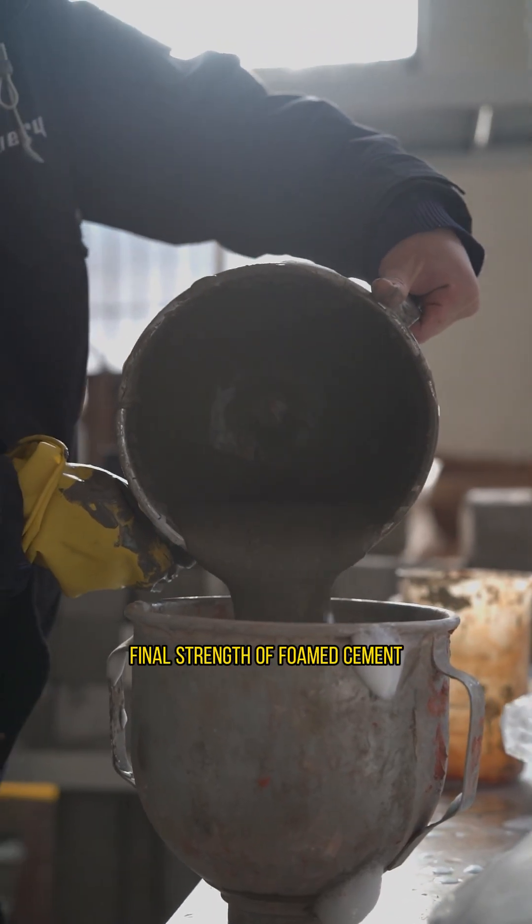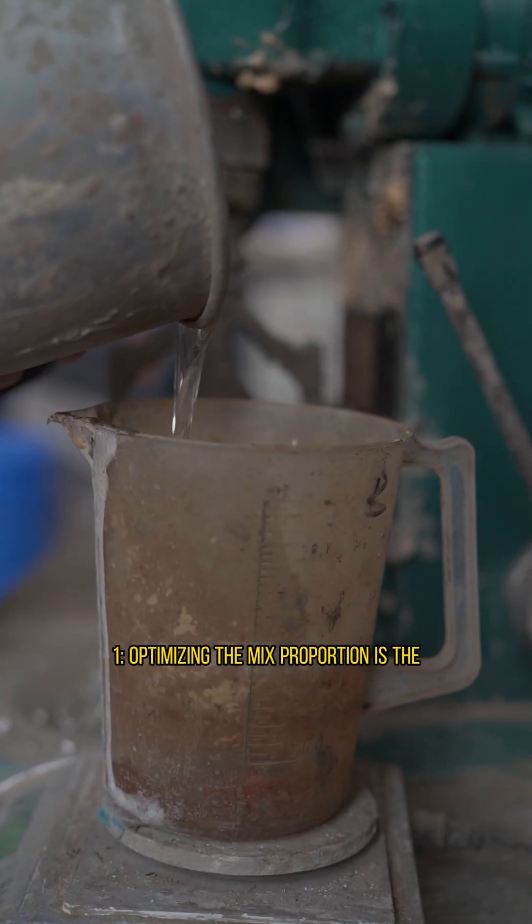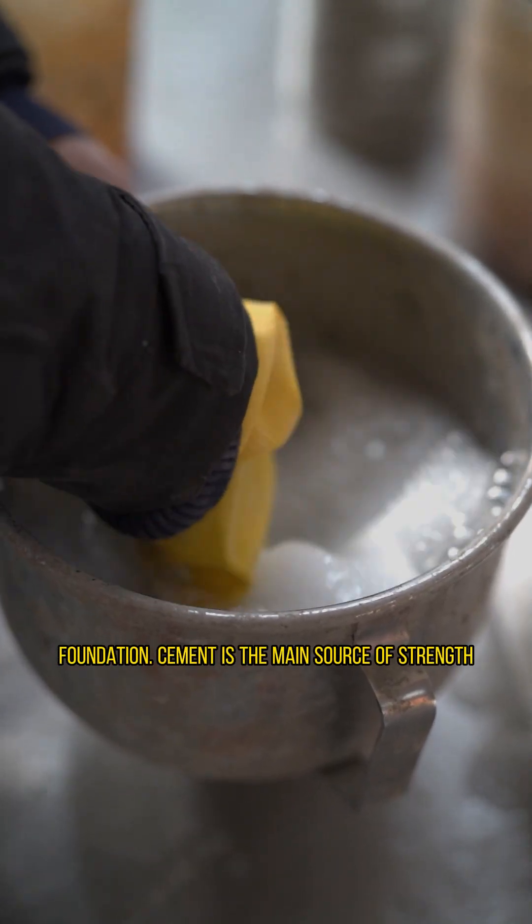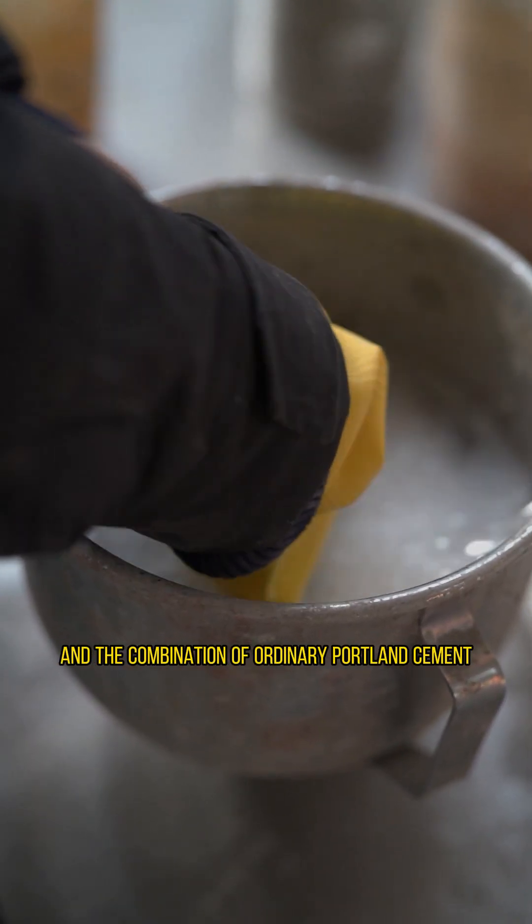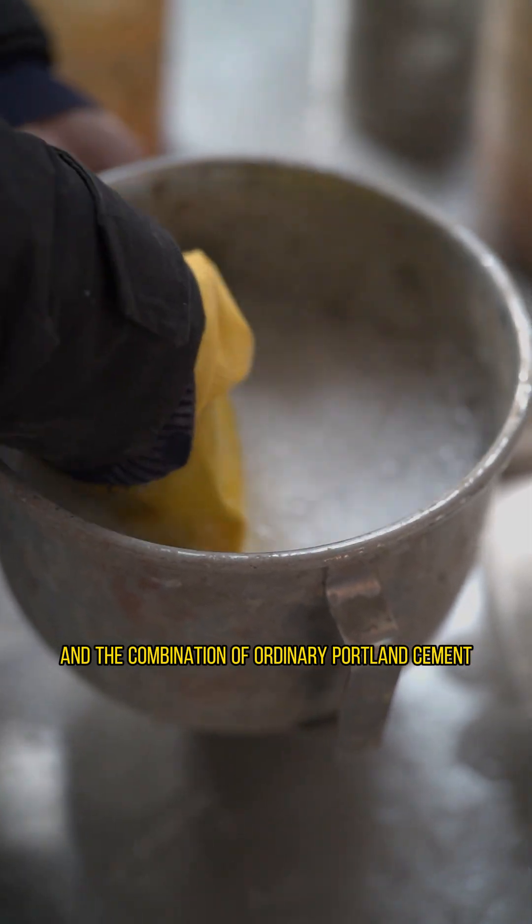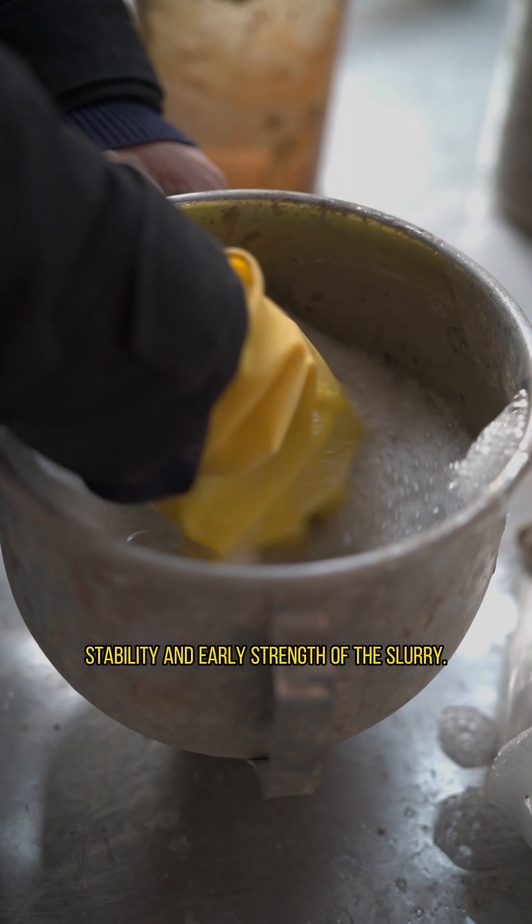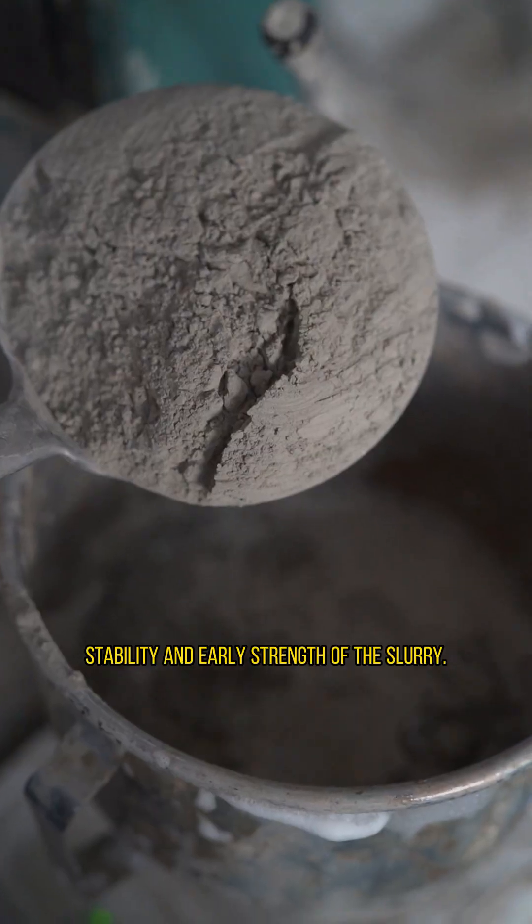Key measures to enhance the final strength of foam cement. One: Optimizing the mixed proportion is the foundation. Cement is the main source of strength, and the combination of ordinary Portland cement and sulfoaluminate cement can improve the stability and early strength of the slurry.